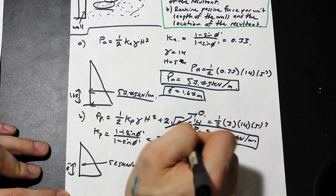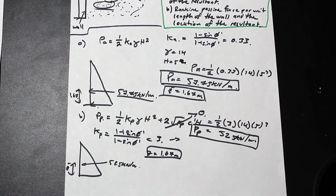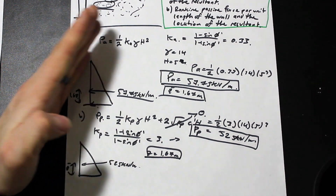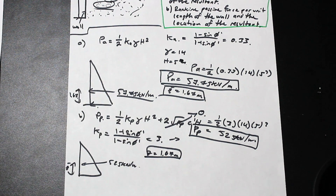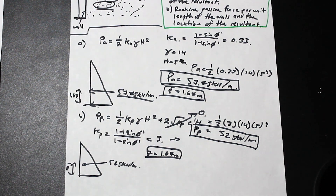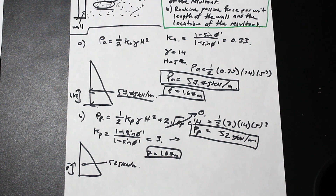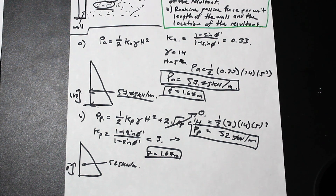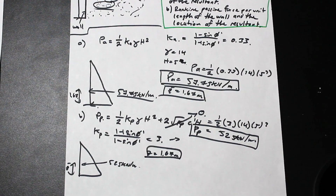So that's it. As you can see, the passive pressure is much higher than the active pressure — 525 versus 57.75 kN/m — because the wall leaning into the soil causes the internal soil pressure to increase by quite a bit. I hope this wasn't too complicated. Let me know in the comments below if you want to see any more soil mechanics content or any more clarification. Thanks for watching, take care.